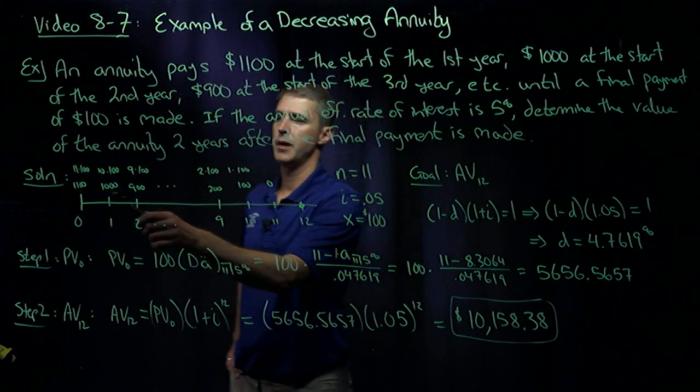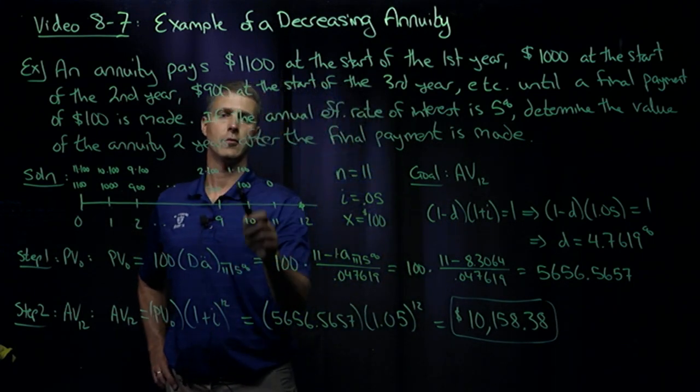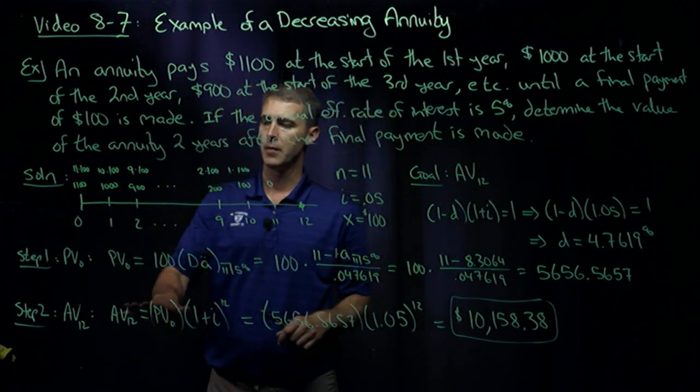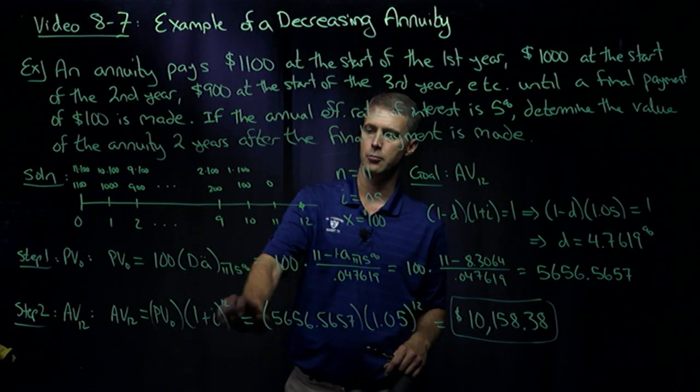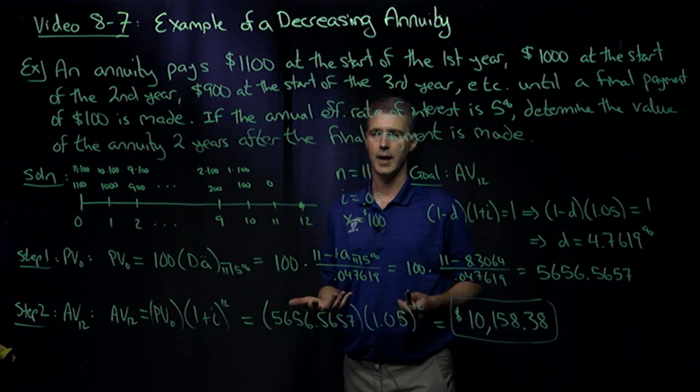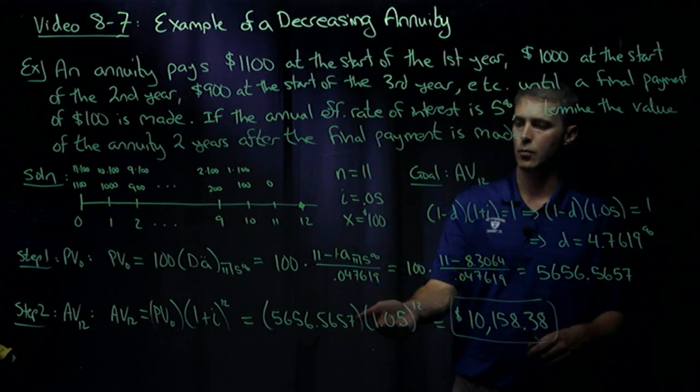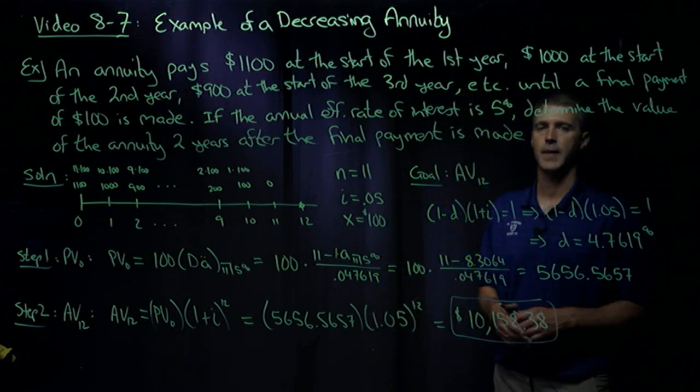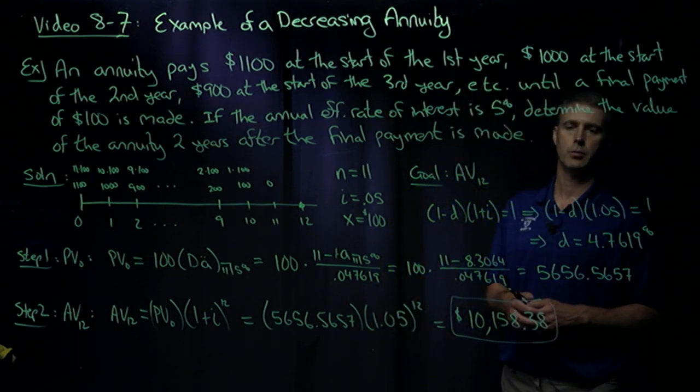Step two, then, is to move this money to where it's desired, which is two years after the final payment, so time 12. So AV12 is the present value pushed forward 12 years with the interest rate I. So there's my present value. 1.05 to the 12th yields 10,158.38.